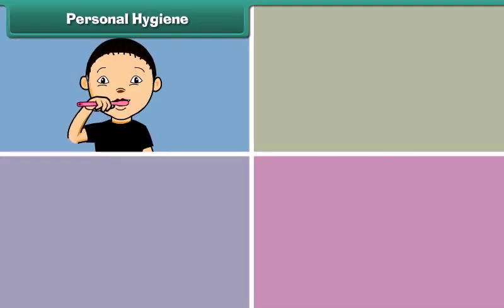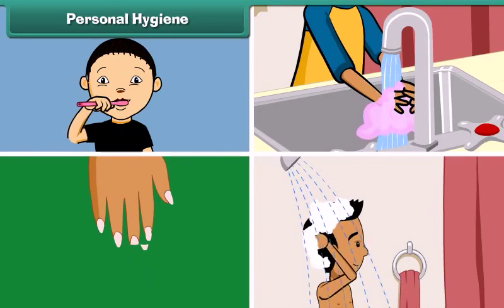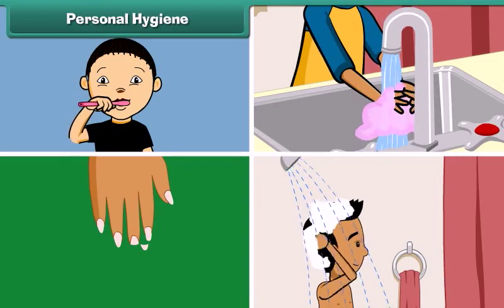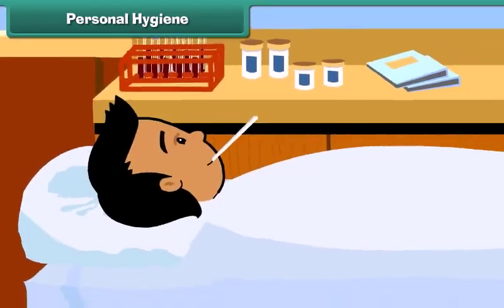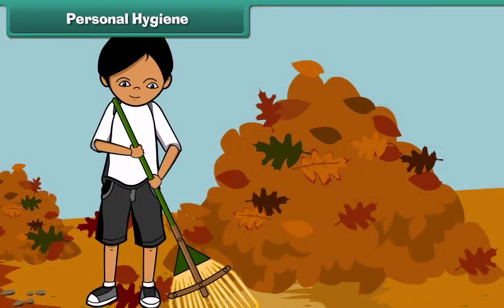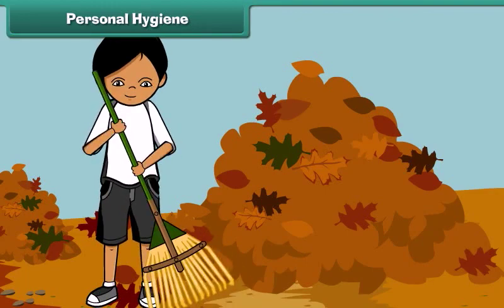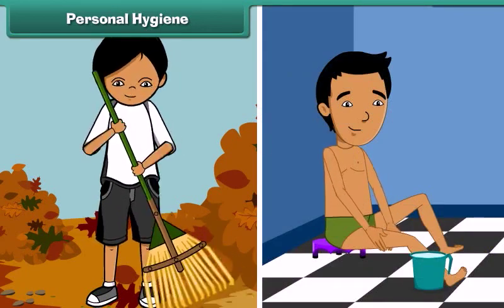Personal hygiene involves keeping one's teeth, hands, nails, hair, body and clothes clean. That is not enough — a clean body in a dirty surrounding can fall ill. So it is important that we keep our surroundings clean as well. Personal hygiene and cleanliness of surroundings go hand in hand.